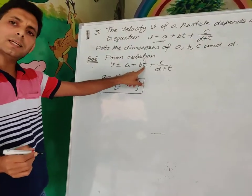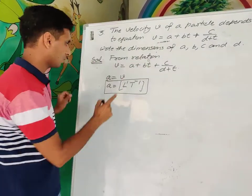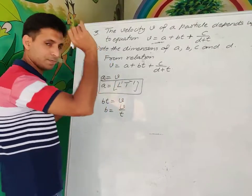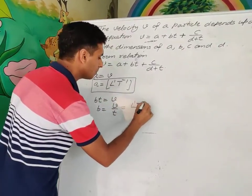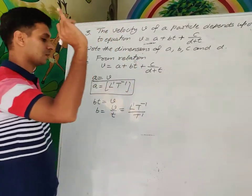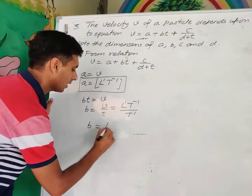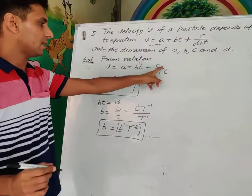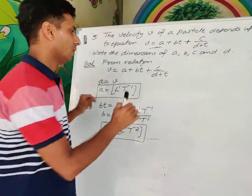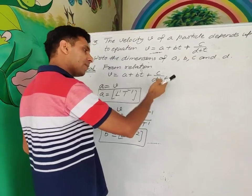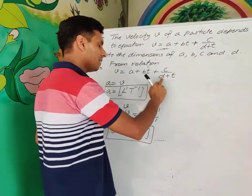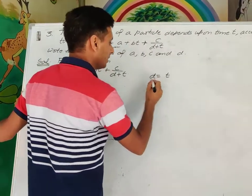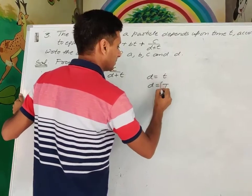B × T must also equal velocity, so B = velocity/time, giving B dimensions of L¹T⁻². For D: D is added to T (time), so D must also have dimensions of time, therefore D has dimensions T¹.